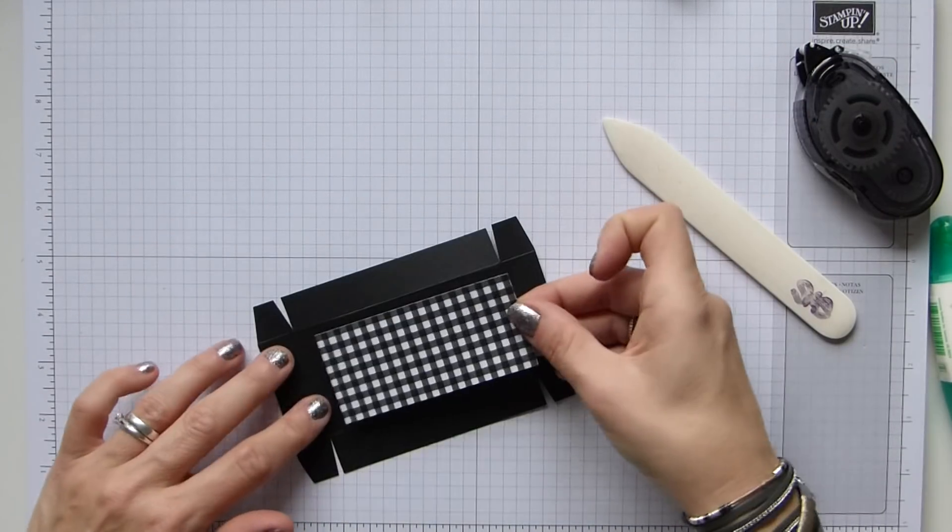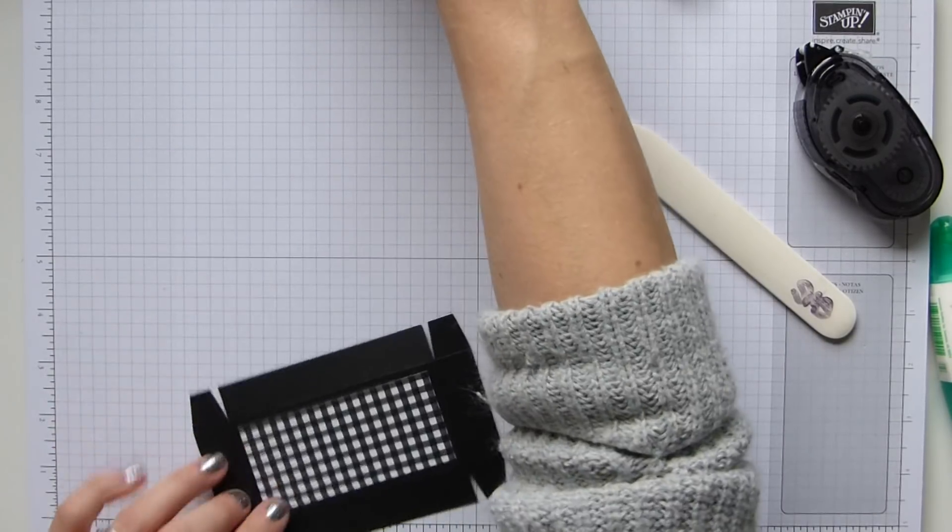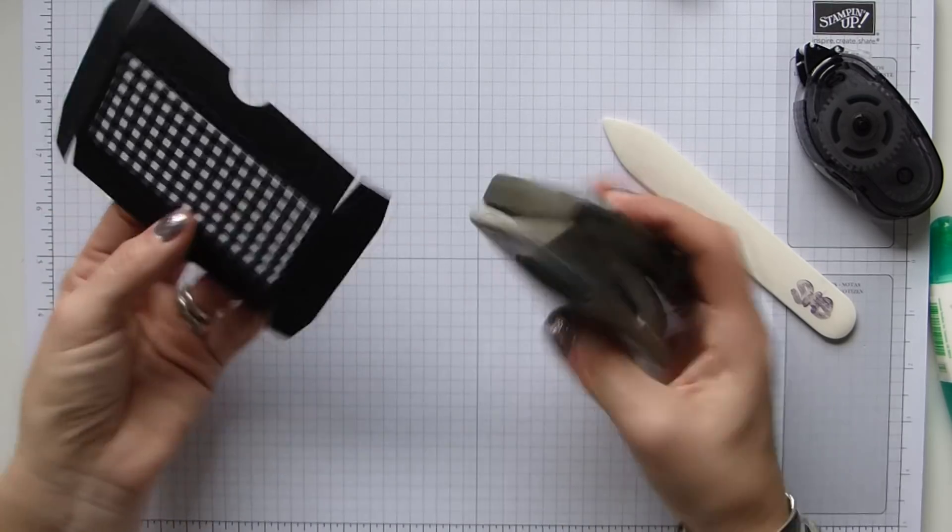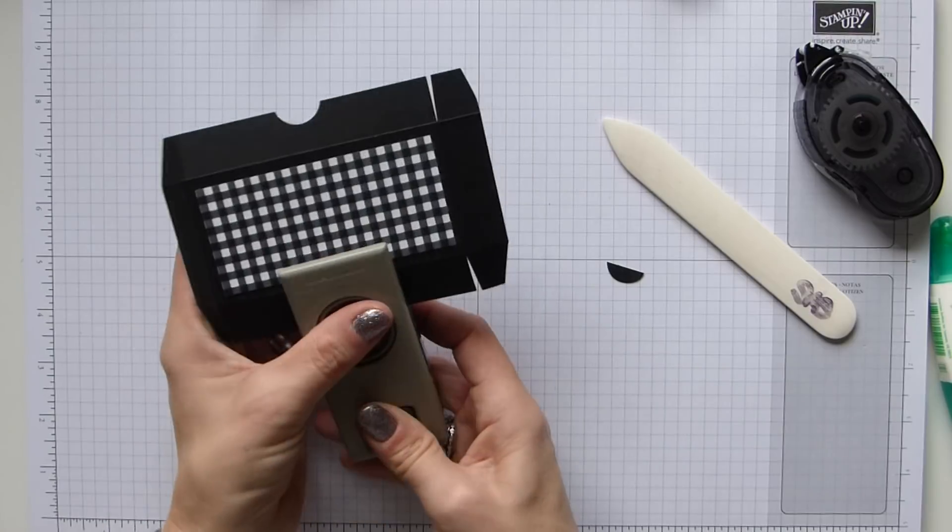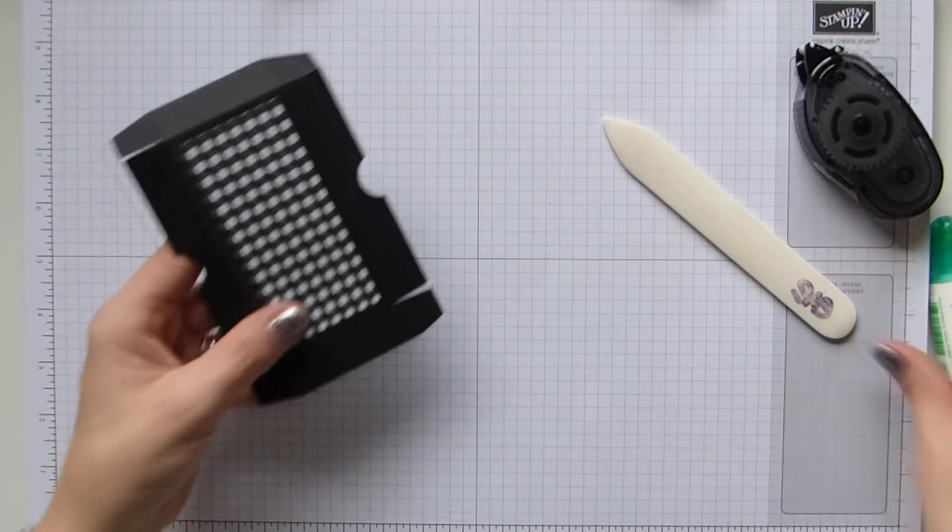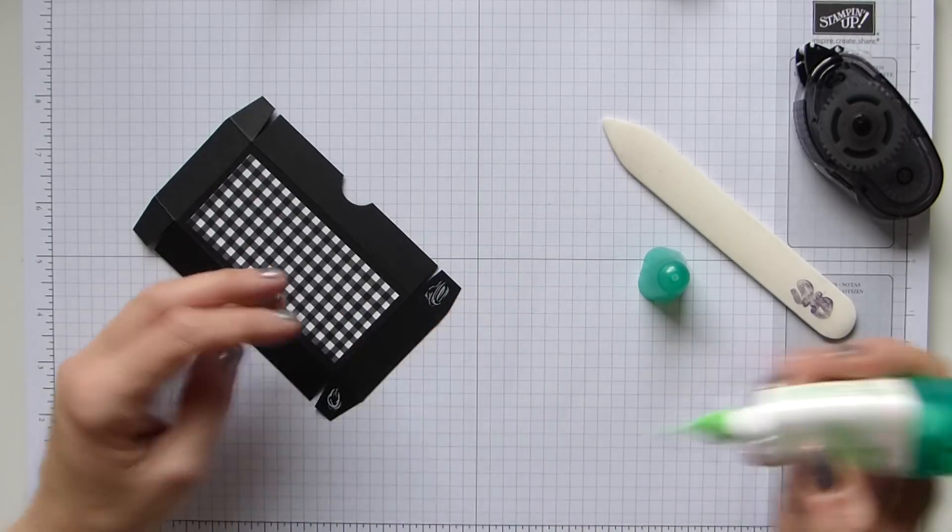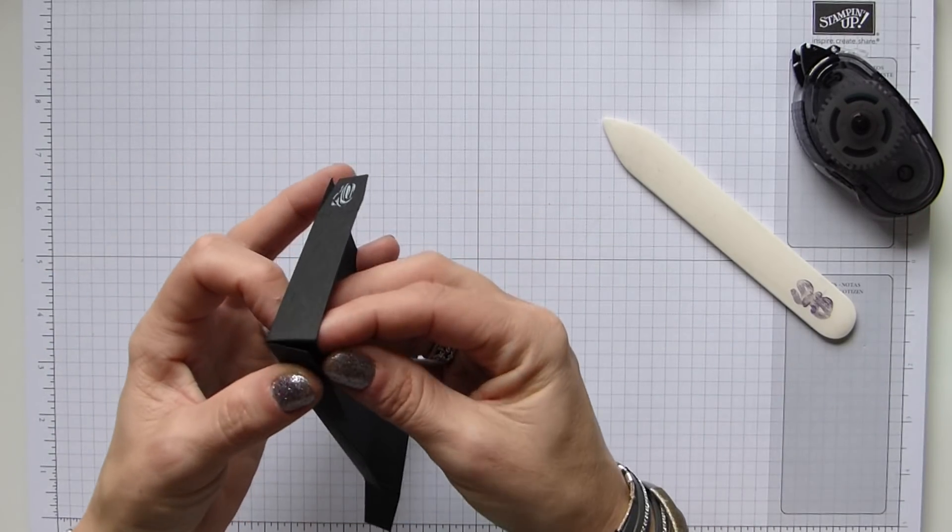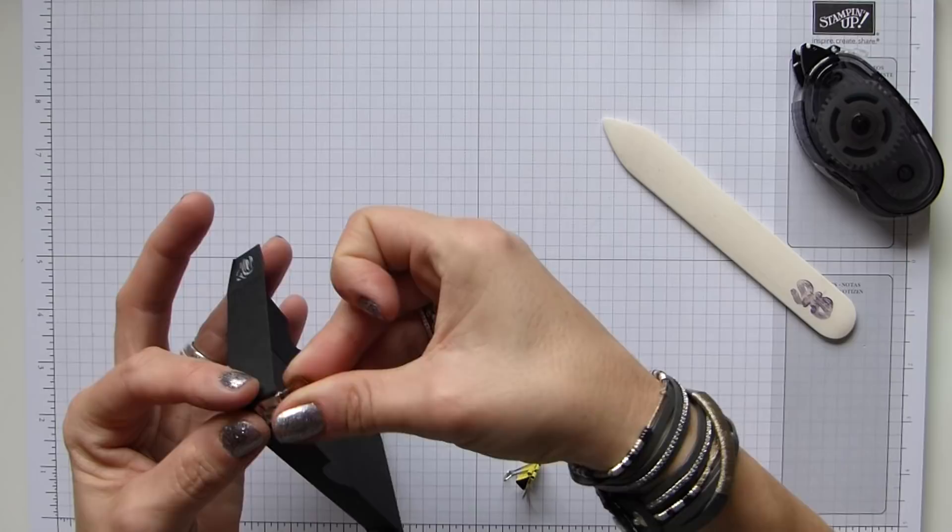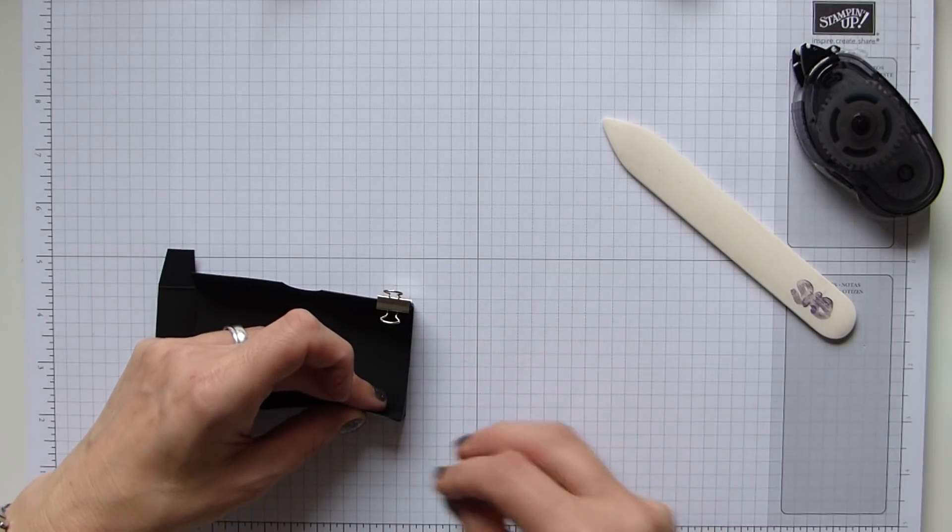So that's here. And then before I forget, again, I'm going to use my three quarter inch circle punch. And then I just want to eyeball or measure the center and just cut a semicircle out. And then again, I'm going to put some adhesive on just two of my tabs. And again, grab my clips here and just pop those on. Make sure that's level. Cool.